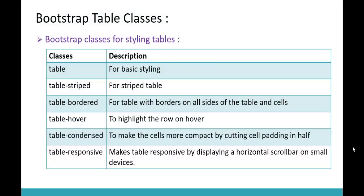Bootstrap provides us a list of table classes. They include Table, Table Striped, Table Bordered, Table Hover, Table Condensed, and Table Responsive. We are going to understand the importance of each of these classes when we start coding in Visual Studio.